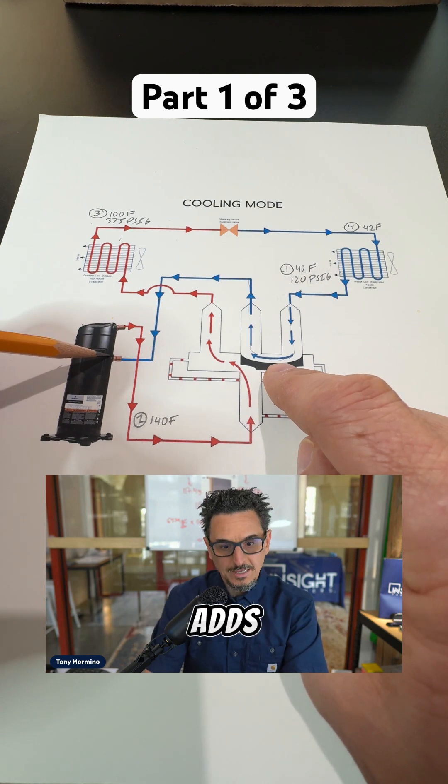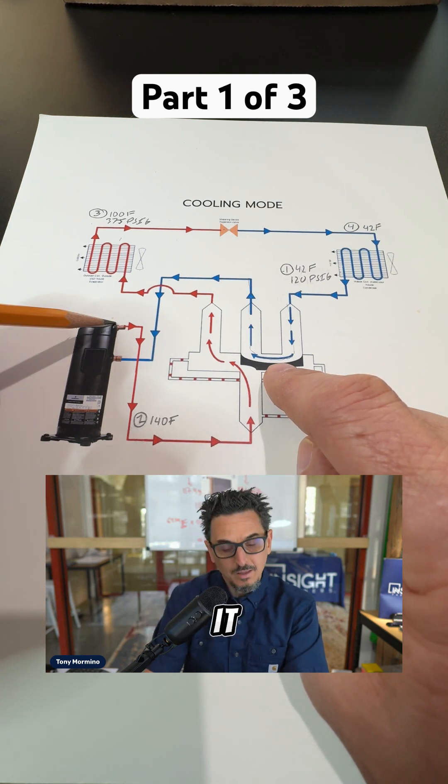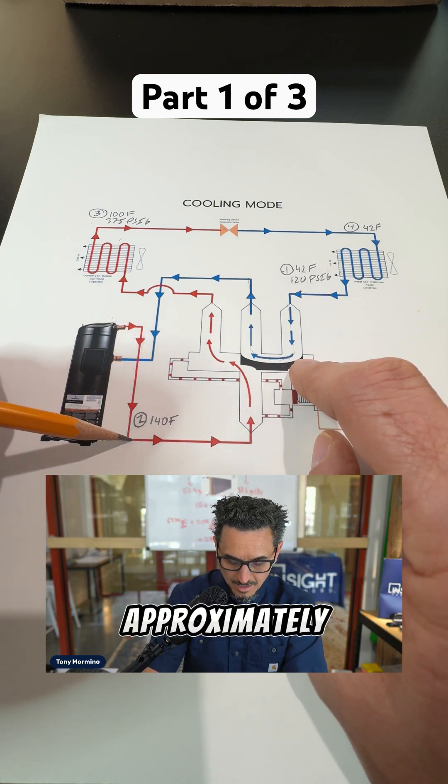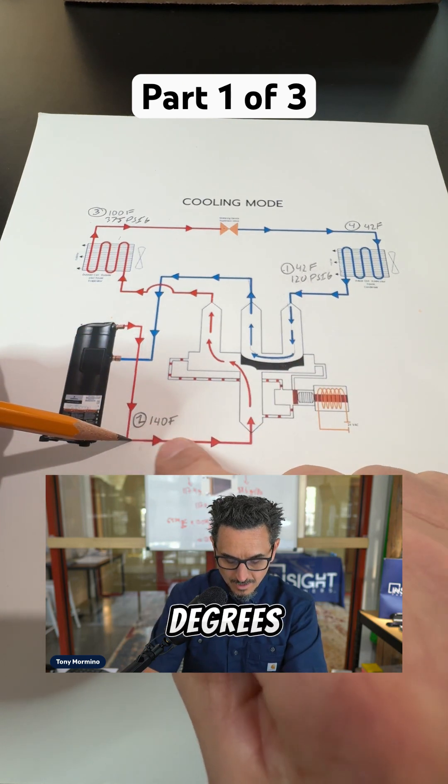The compressor takes the refrigerant and adds heat and pressure to it. You have the discharge of the compressor here, which in this case is approximately 140 degrees.